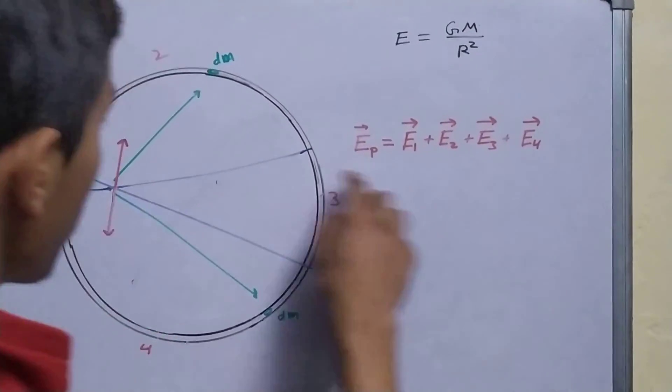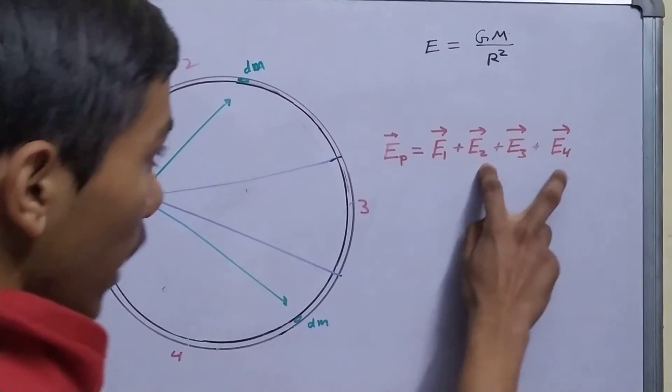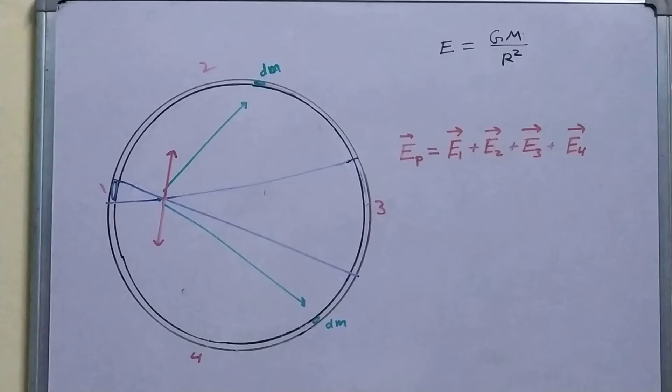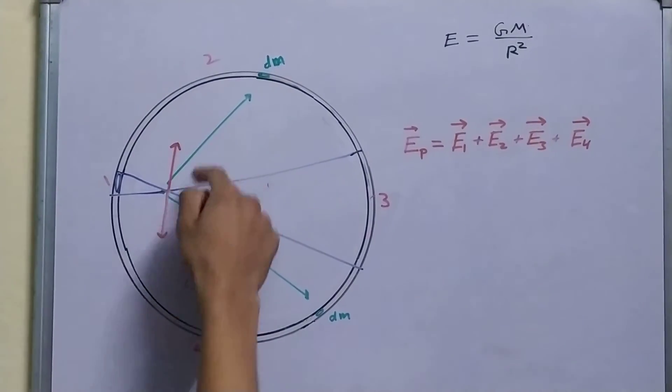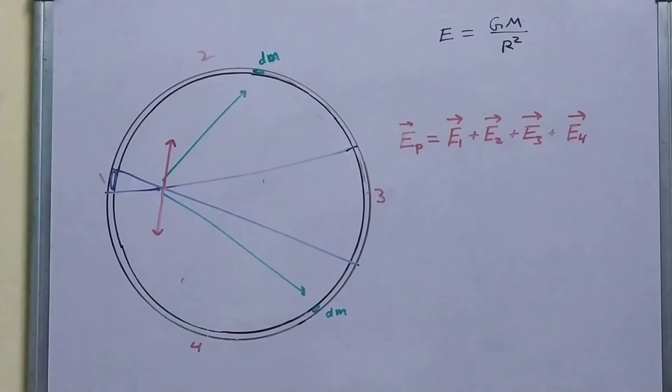The fields due to the region, region two, and region four, have to cancel out, because they have the same magnitude, and are in the opposite direction.